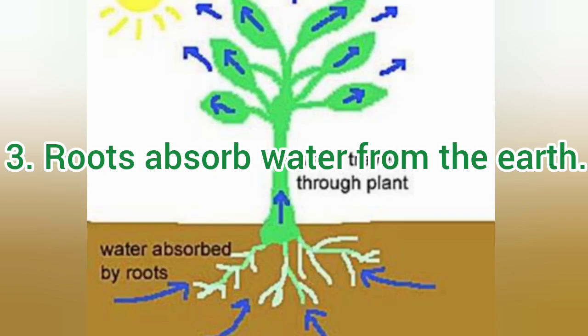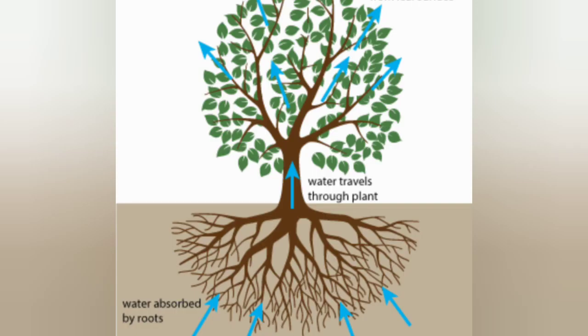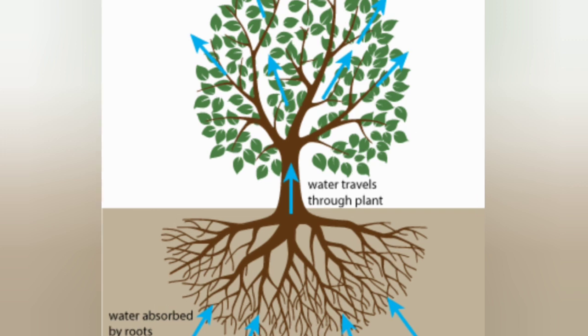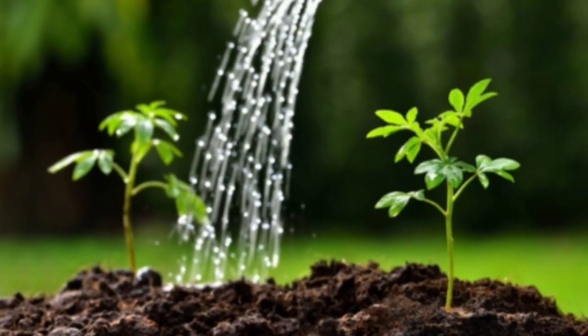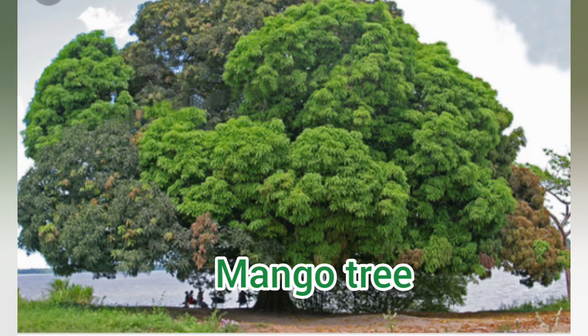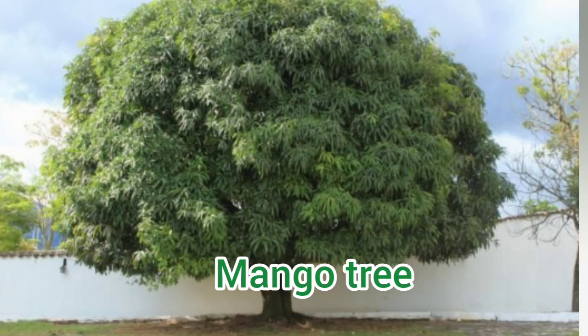Number 3 is: roots absorb water from the earth. Dear children, plants require water for their growth. Roots of the plants absorb water from the soil and transfer it to the other parts of the plant. Small plants are not so deep-rooted, that is why they should be watered every day. But the roots of big trees like the mango tree are very deep, so they absorb water from greater depth.